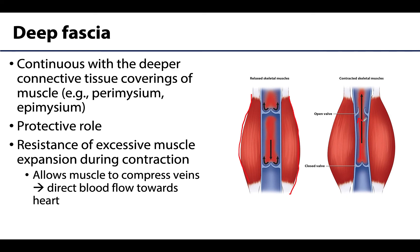The deep fascia, the contracting muscles, and those veins with valves work together as a type of muscular venous pump to return deoxygenated blood to the heart. This is particularly important in the lower limbs, where blood is moving against gravitational pull.